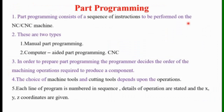First of all, we will see what is meant by part programming. Numerical control part programming is the procedure by which a sequence of processing steps — instructions to be performed on an NC machine — are defined. It involves the preparation of a punched tape or other input medium used to transmit the processing instructions to the machine tools.